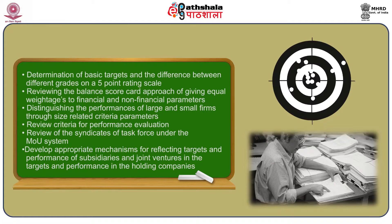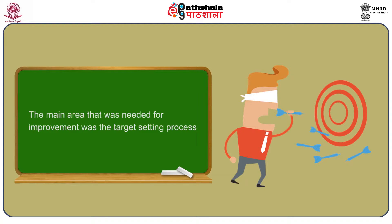This report highlighted several aspects: determination of basic targets and differences between grades on a five-point rating scale; reviewing the balanced scorecard approach of equal weightages to financial and non-financial parameters; distinguishing performance of large and small firms through size-related criteria; reviewing the criteria for performance evaluation; reviewing the syndicates of the task force; and developing mechanisms for reflecting targets of subsidiaries and joint ventures in holding company performance. The main areas needing improvement were the target-setting process and determination of weightages for different parameter criteria.